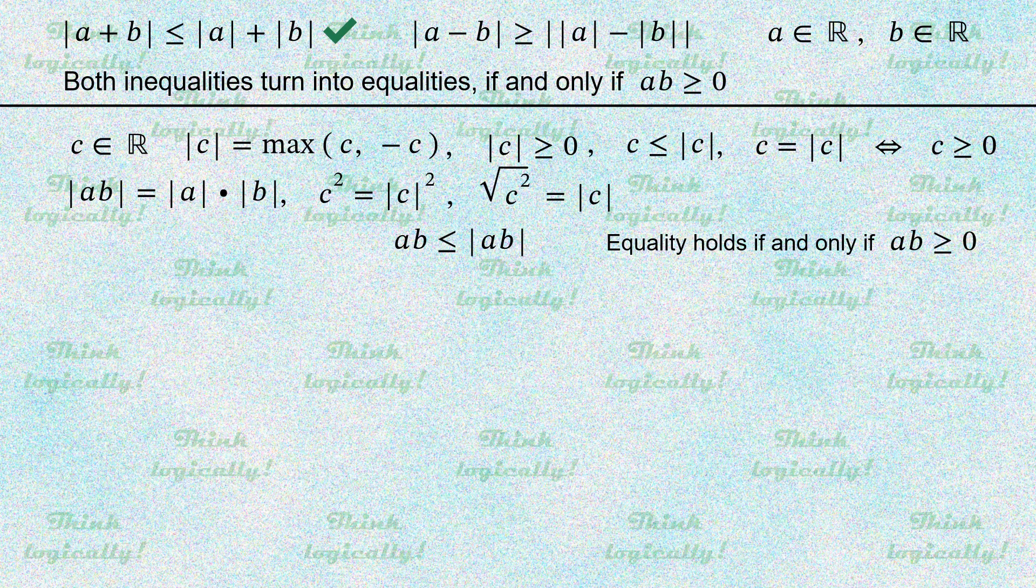Again, we start with the familiar inequality: a times b is not greater than the absolute value of a times b. However, this time we multiply both sides of it by negative 2. Therefore, the inequality sign changes to the opposite.